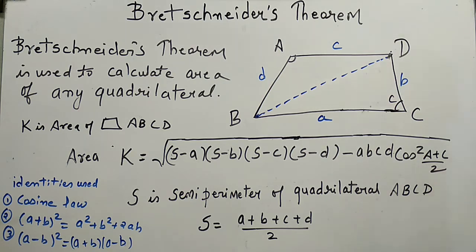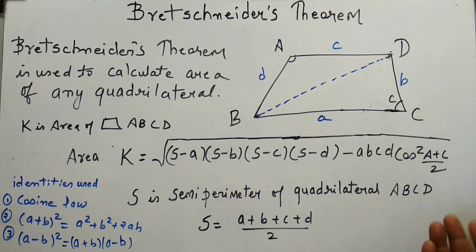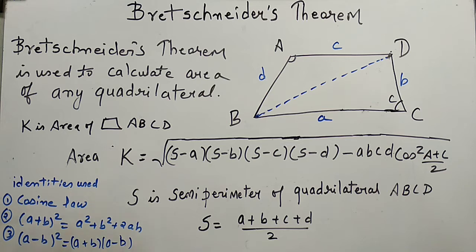In this formula, S is the semi-perimeter of the quadrilateral, and A, B, C, D are the respective sides of that quadrilateral. For proving this theorem, we are using the cosine law and some algebraic identities. So let's start the process.